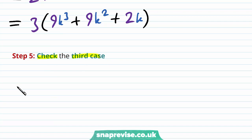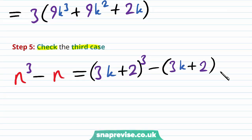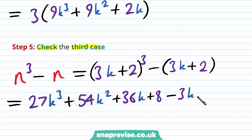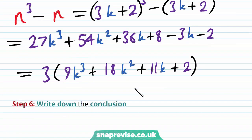For case 3 (n = 3k + 2): n³ − n = (3k+2)³ − (3k+2). Expanding the first bracket gives 27k³ + 36k² + ... + 8, minus (3k + 2). This simplifies to 3(9k³ + 18k² + 11k + 2), which is again a multiple of 3.